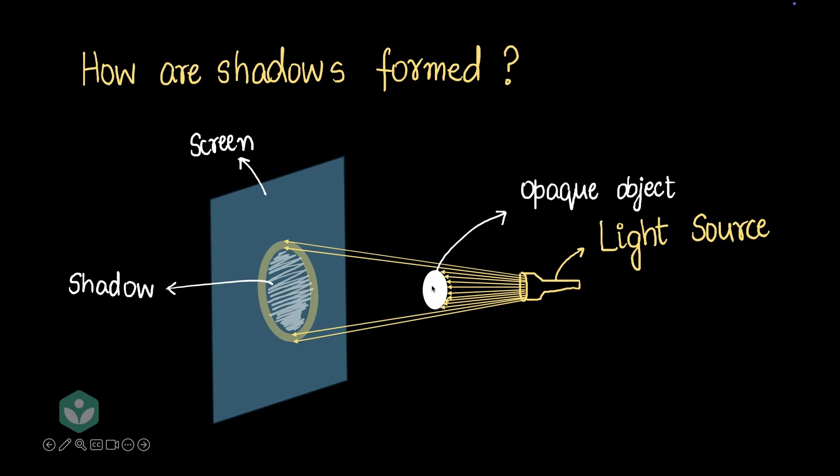You might be wondering why this happens. Well, when we move the opaque object closer, more rays get blocked by the opaque object, and that causes a larger shadow to be formed because very less light can actually travel and reach the screen now. I'd like you to pause and think about this.